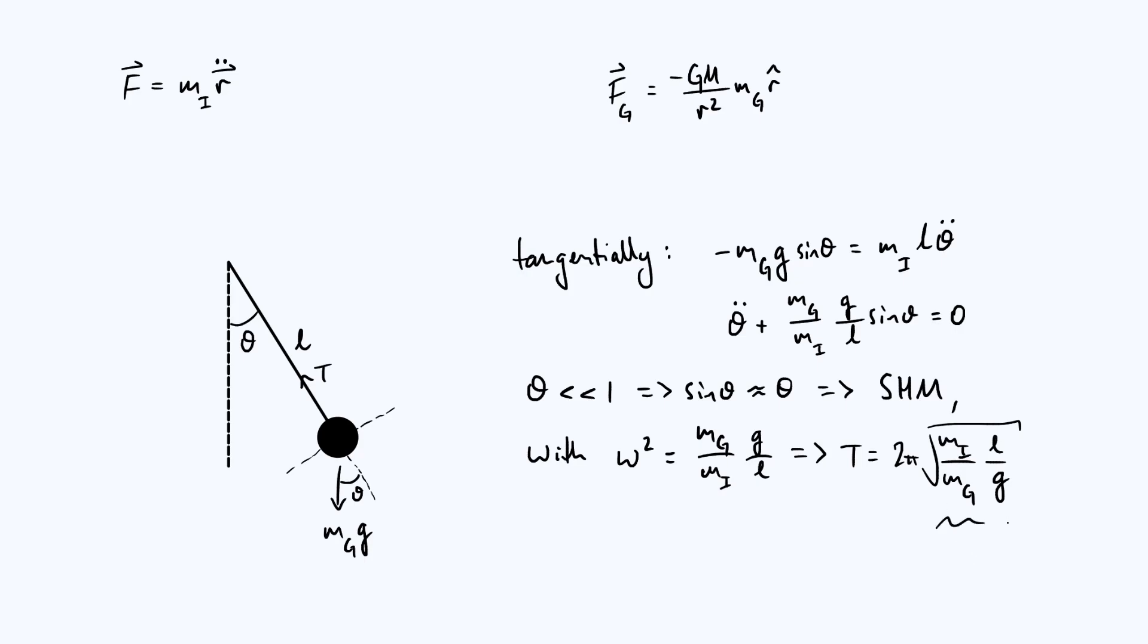Remember however, that in principle inertial and gravitational mass don't have anything to do with each other, just the same way that inertial mass and electric charge have nothing to do with each other.